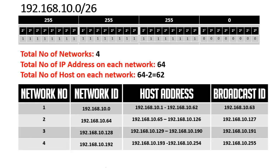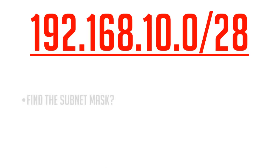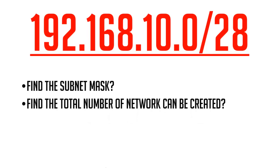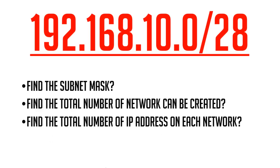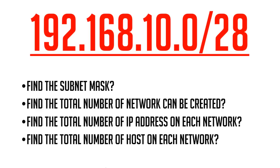Now it's time for the test. Here is the question: 192.168.10.0 with the CIDR value /28. Tell me: what will be the subnet mask? Find the total number of networks that can be created. Find the total number of IP addresses on each network. Finally, find the total number of hosts that can be assigned on each network. Answer in the comment section below — I will give you the answer in my next video. Please subscribe to my channel. Thanks for watching.